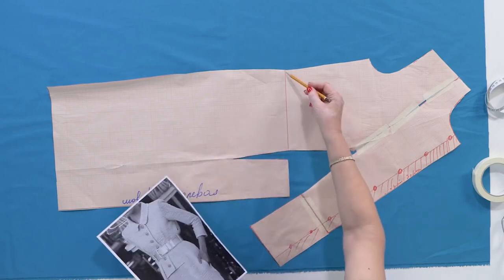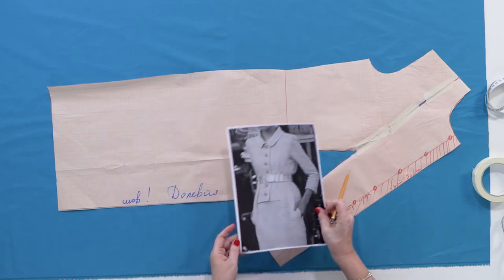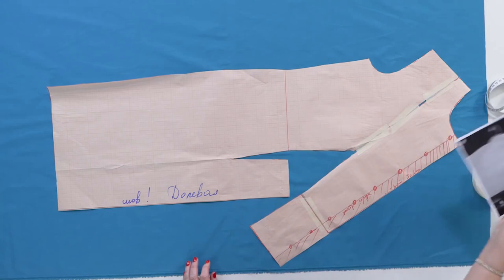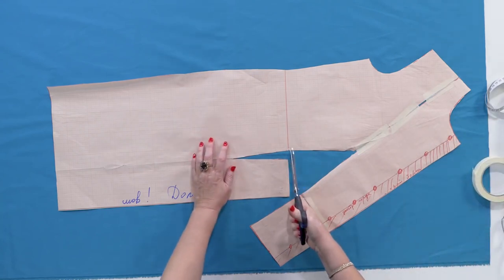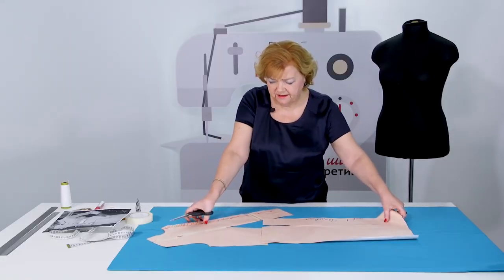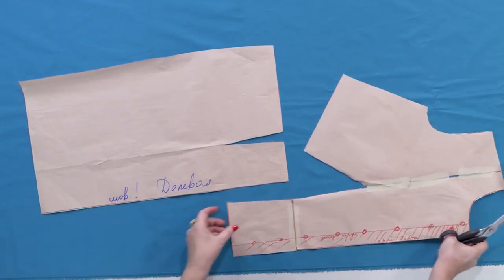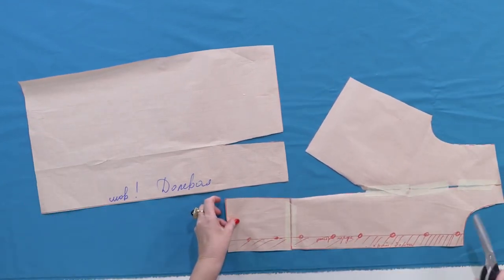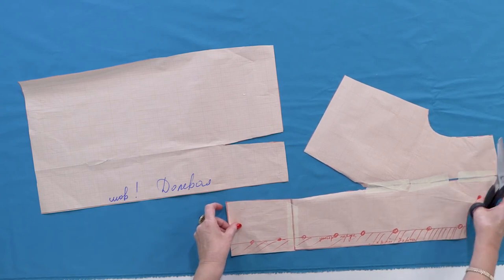It took us some time to decide what to do. We've decided to extend the skirt. That's why we have to cut the pattern on the waistline. Be very attentive. Now, when I cut the pattern, I can place both the skirt and the bodice on the lengthwise grain.